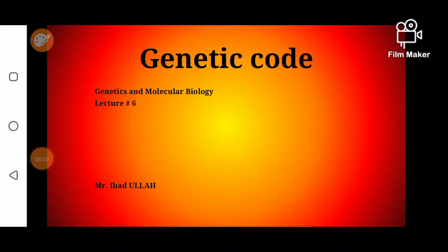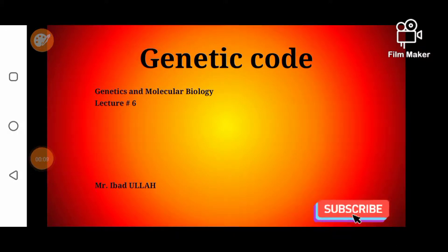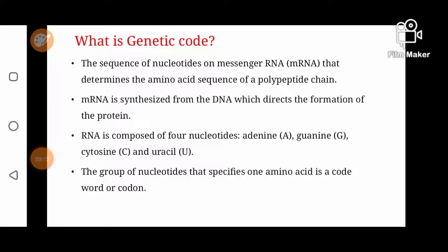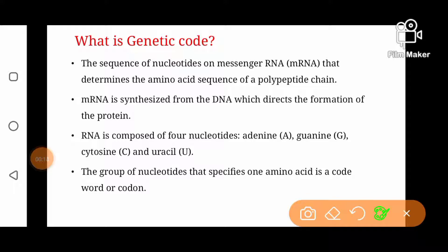Welcome friends, this is Abad and I am here with another video from Abad's Biology. Today we are going to discuss genetic code. What is genetic code? Genetic code is the sequence of nucleotides on messenger RNA that determines the amino acid sequence of a polypeptide chain or a protein. Genetic code messenger RNA pe nucleotide sequence hai jo polypeptide chain mein amino acid sequence ko determine kerta hai.